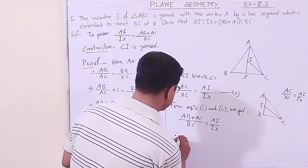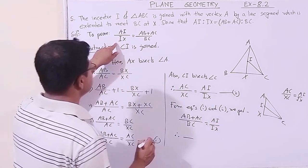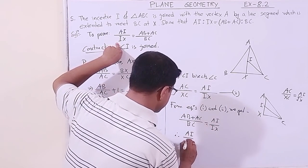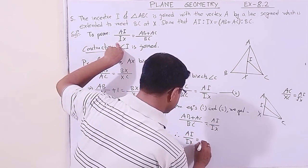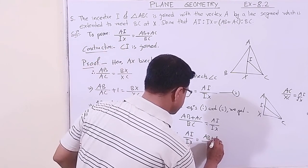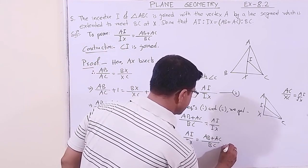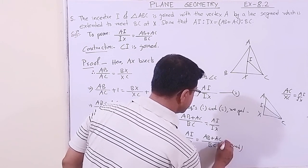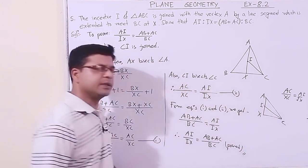Therefore AI by IX equals (AB plus AC) divided by BC. Thus we have proved the result. The solution is very, very simple.